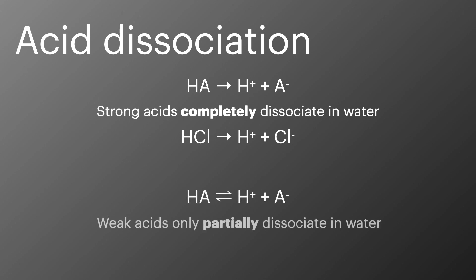Weak acids only partially dissociate in water and they form an equilibrium between the complete acid molecule HA and the dissociated ions H plus and A minus. This equilibrium often lies heavily to the left which means the concentration of H plus is much less than the concentration of the acid solution.